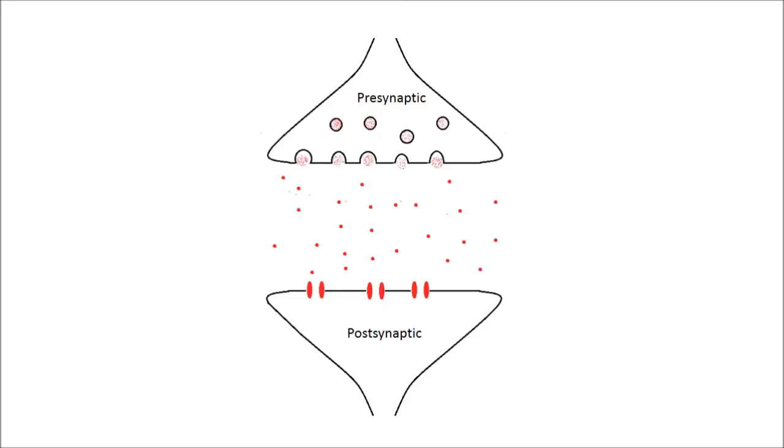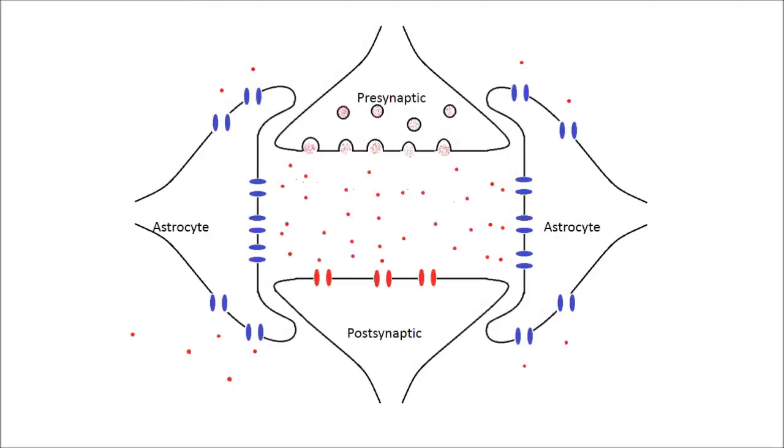Here is a picture of a typical synapse as it is usually presented in most textbooks. A more accurate representation would look a little more like this. The cells surrounding the synapse are called astrocytes.